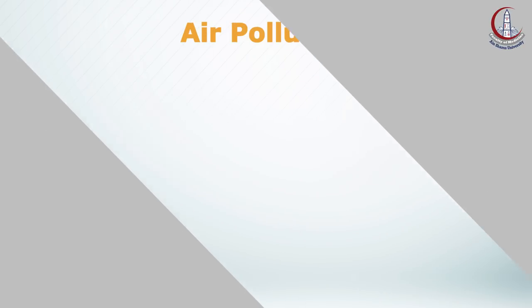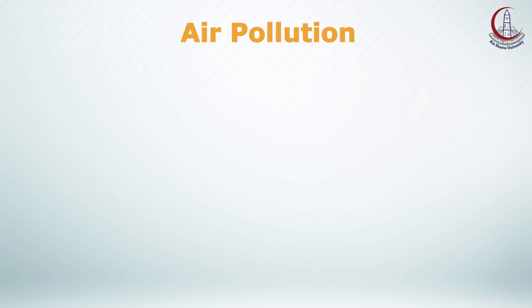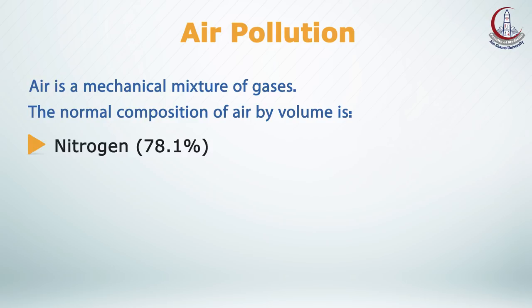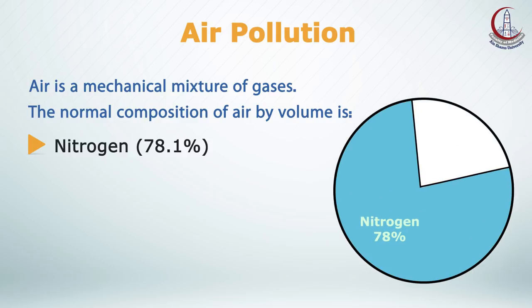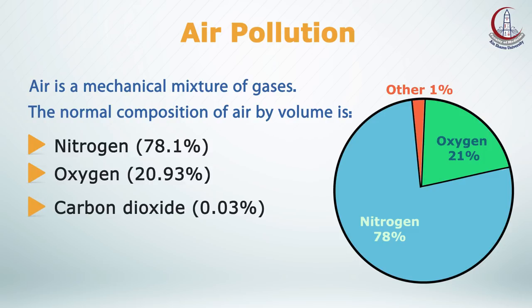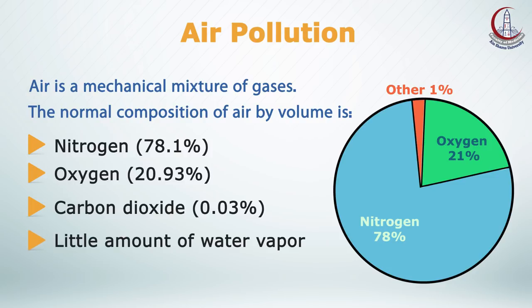To understand what air pollution is, you should first know the normal composition of air. Air is a mechanical mixture of gases. Its normal composition is nitrogen at 78.1 percent, oxygen at 20.93 percent, and carbon dioxide at 0.03 percent.